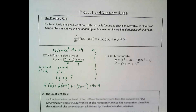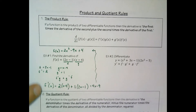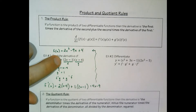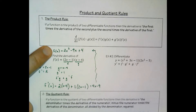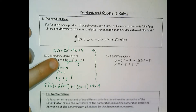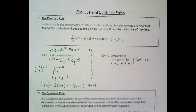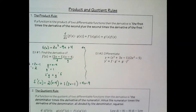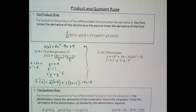I know in this case it seemed almost overkill to go through the process of doing the product rule, but it's going to be mandatory when we have functions that we cannot multiply together into a polynomial. So let's see this again in action.